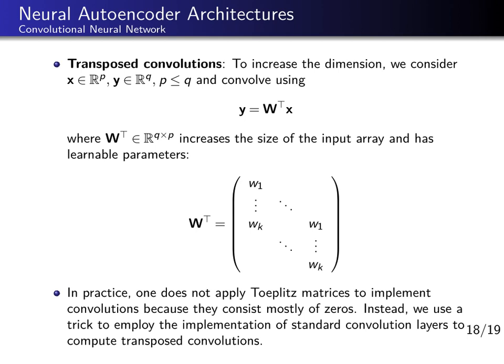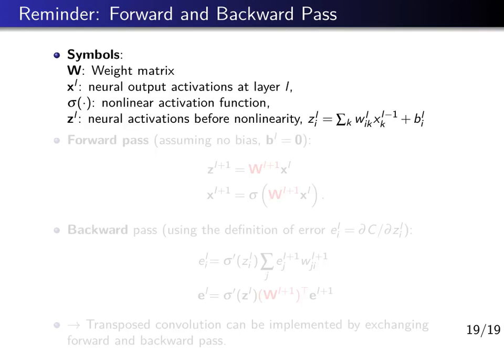Storing the Toeplitz matrix and doing a dense matrix-vector multiplication would be very inefficient: we would store a large matrix with many zeros and compute many products where one factor is zero — a waste. So convolutions are implemented directly as sparse matrix-vector products, taking products only over pairs of nonzero numbers. In an efficient neural network implementation we have a function to compute convolutions efficiently without dense matrix-vector products. The question then becomes: how can we use that same function to implement transposed convolutions efficiently?